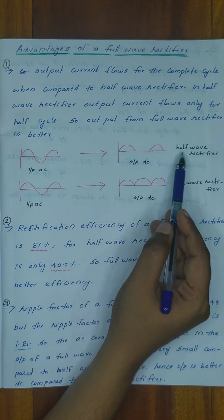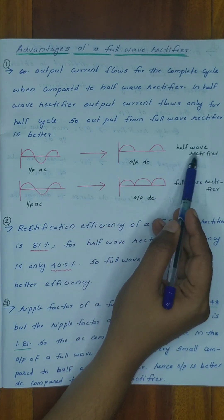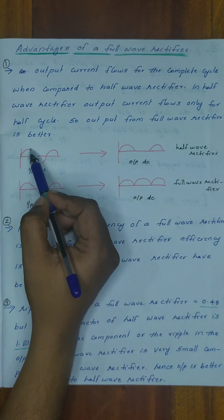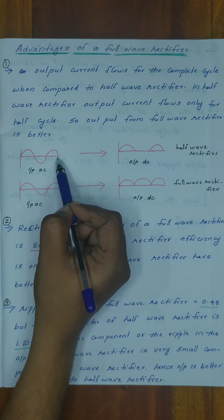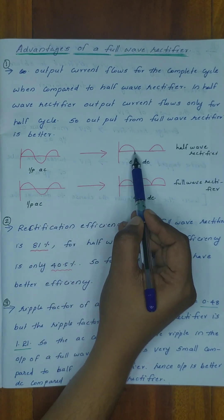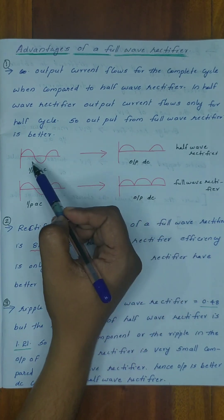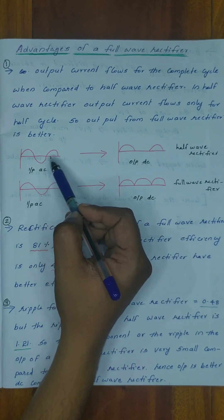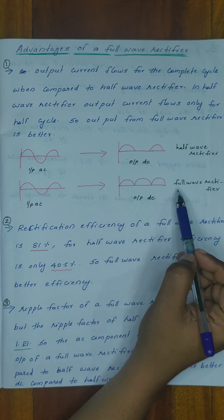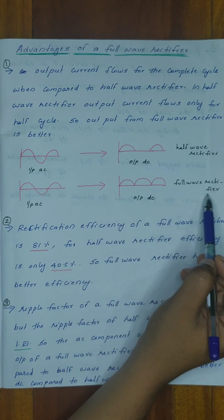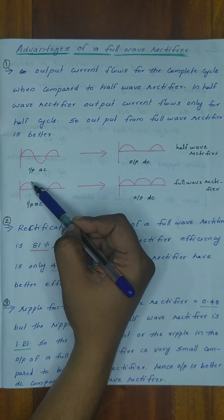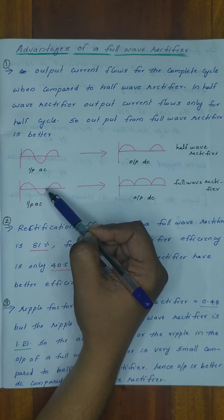In a half wave rectifier, we have input AC and in this half cycle we convert AC to DC. In the case of a full wave rectifier, that is the full cycle — both half cycles are utilized to convert AC to DC.